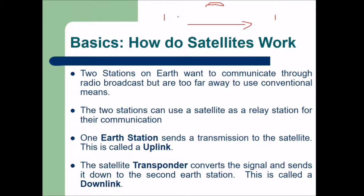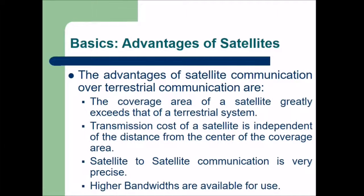One earth station sends a transmission to the satellite — this is called the uplink. The satellite transponder converts the signal and sends it down to the second earth station — this is called the downlink.